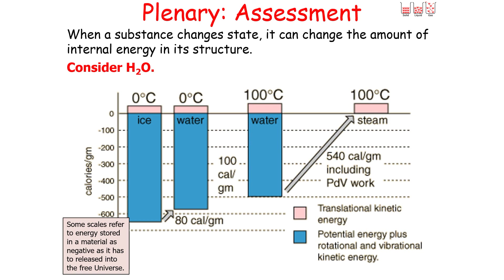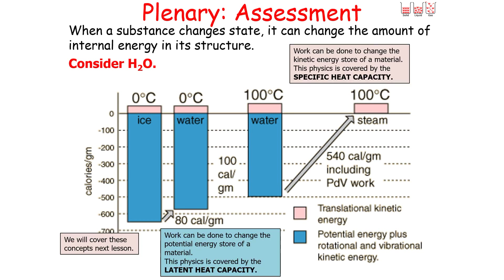Work can be done to a system in two ways. First, work can be done to change the kinetic energy store of a material, which will change its temperature — this physics is covered by specific heat capacity. Second, work can be done to change the potential energy store of a material, changing its state — this is covered by latent heat. We'll cover these concepts in the next lesson.